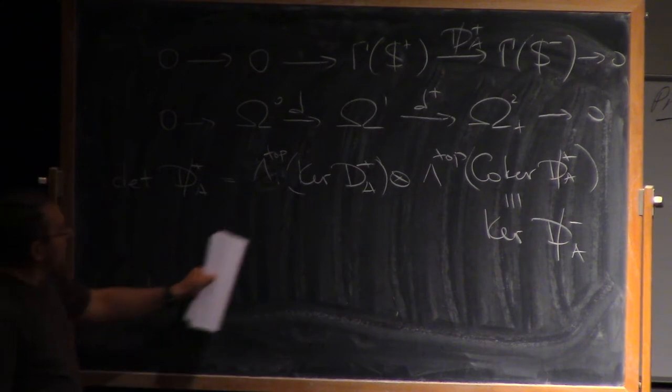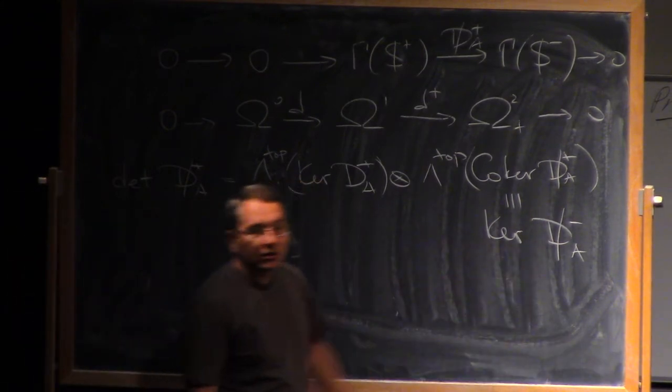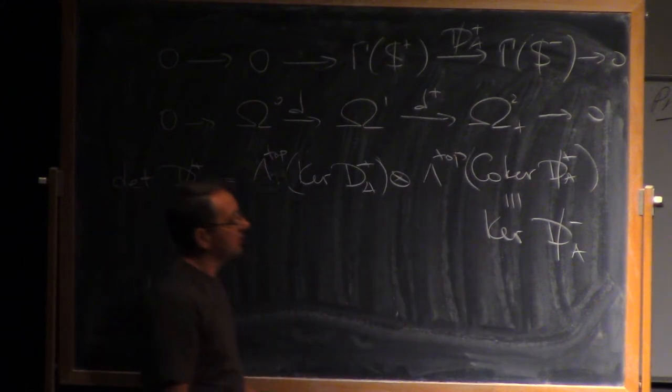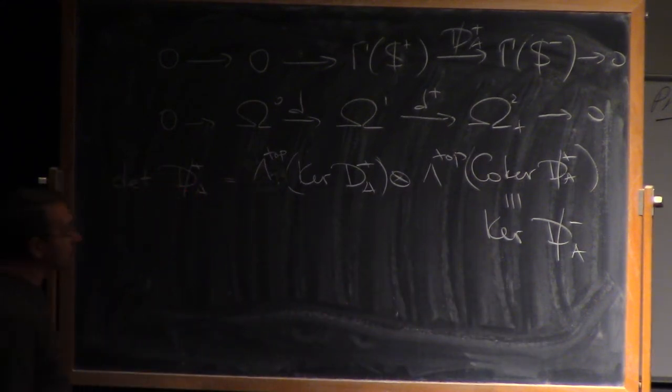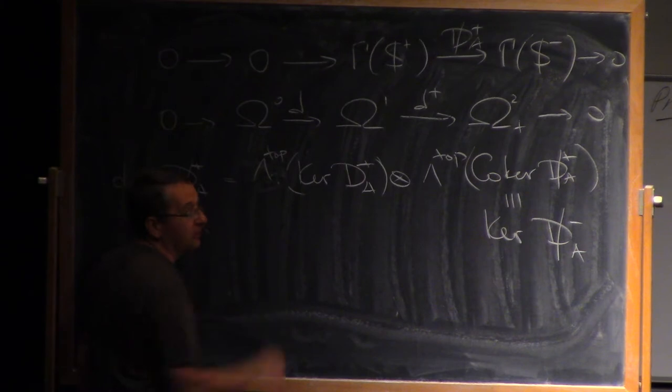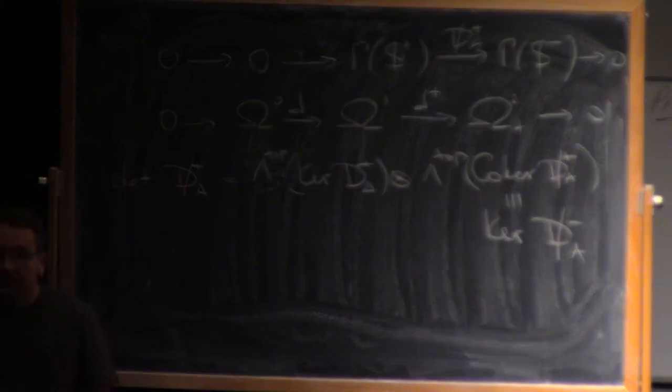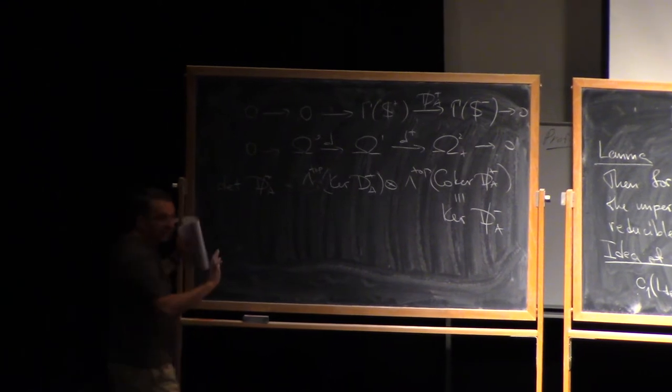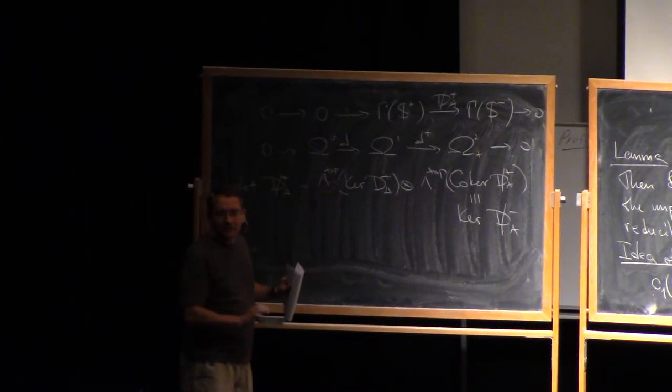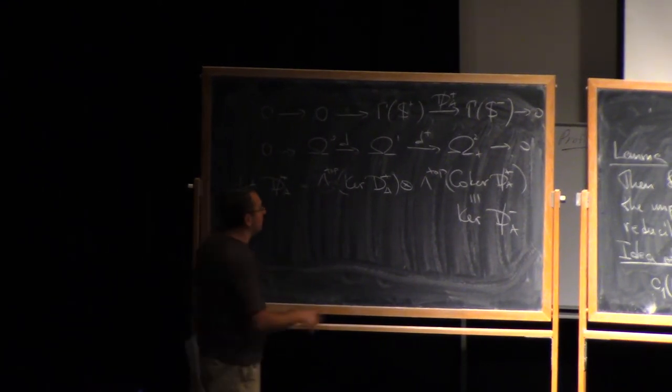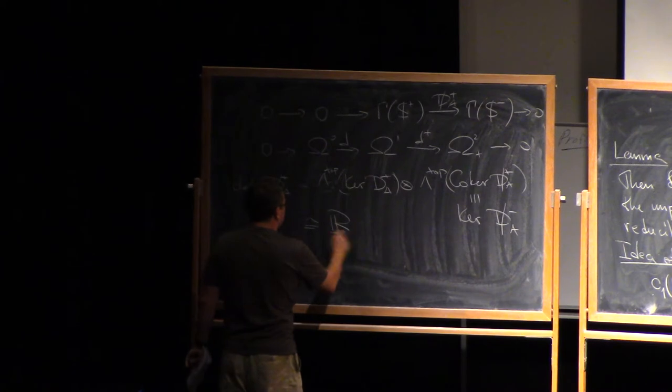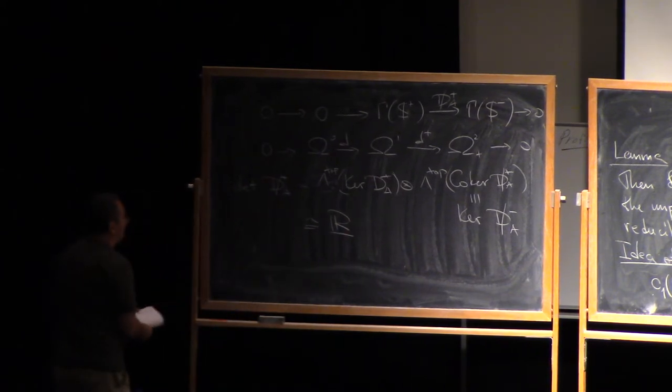Now, the point is that both dA plus and dA minus are complex linear operators, so in particular, the kernels are complex linear vector spaces, and they always have a preferred orientation, at least if you fix your convention. Right, so conventions are not really uniform, you have to be aware of that, but once we fix the convention, this is always R.